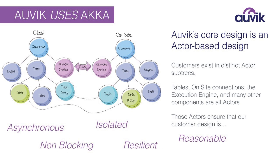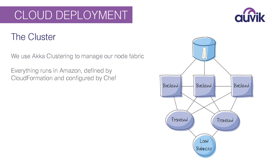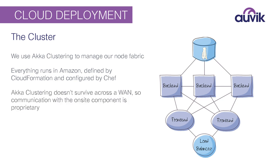The deployment uses ACA clustering to manage the front ends and back ends communicating in a mesh style. The iron on which this runs is defined by Amazon CloudFormation and Chef. ACA clustering lets you manage your node fabric, but doesn't give you deployment tooling. It also doesn't survive across the WAN, so the clustering is only in the cloud, not for on-site agents. The back ends and front ends are scaled independently because they have entirely different load semantics, so in CloudFormation we've made them independent.